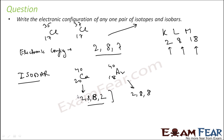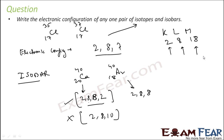Please pay attention: 2, 8, 10 is incorrect for calcium. Although the M orbital can accommodate 18 electrons, since M is the last orbital in this case, the outermost shell can accommodate a maximum of 8. So 2, 8, 8, 2 is the correct electronic configuration for calcium.